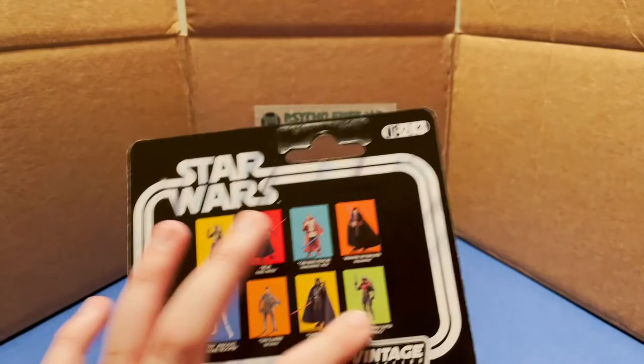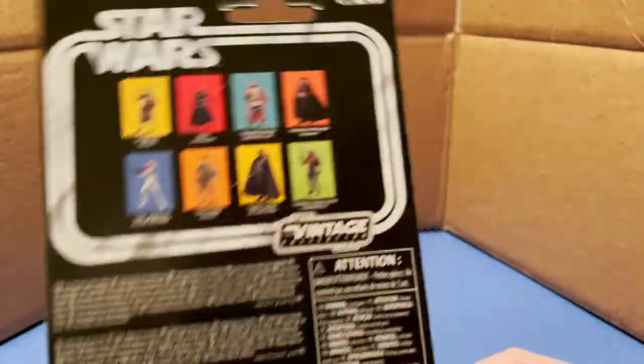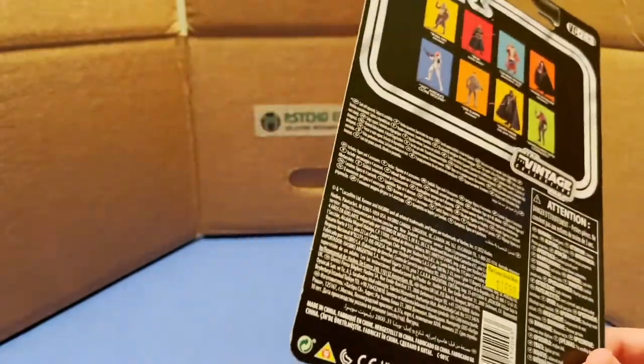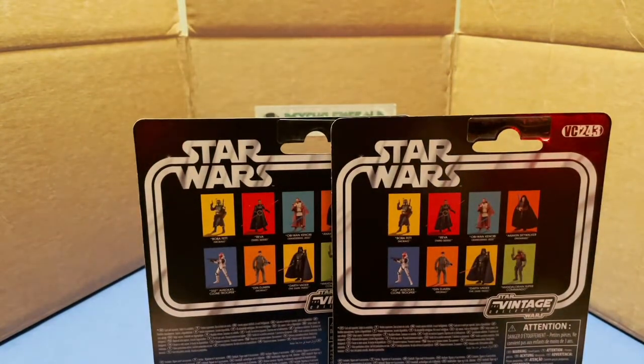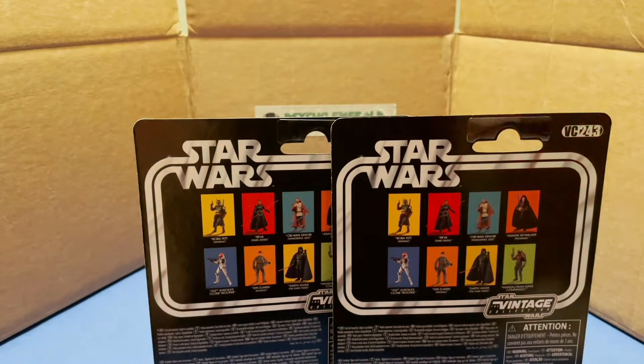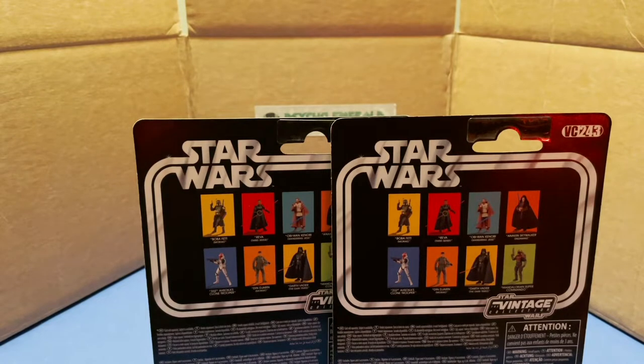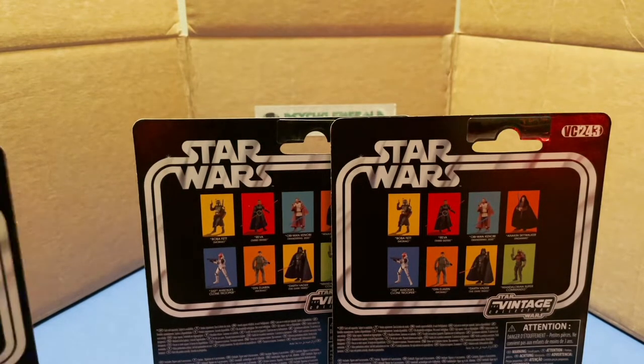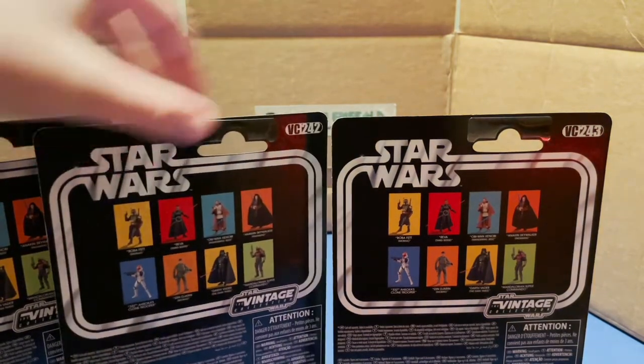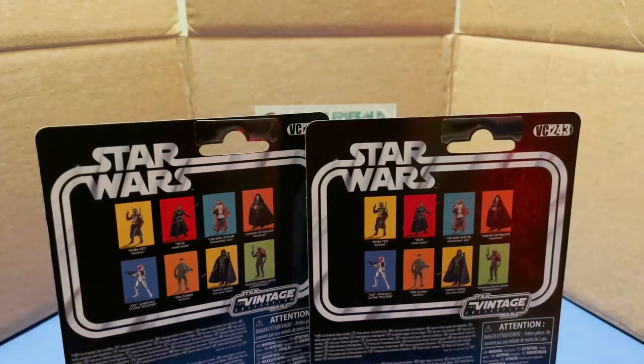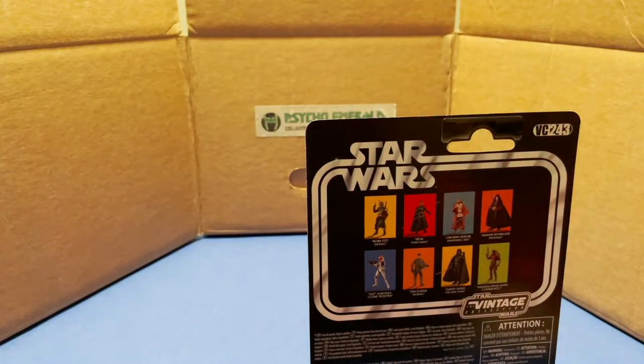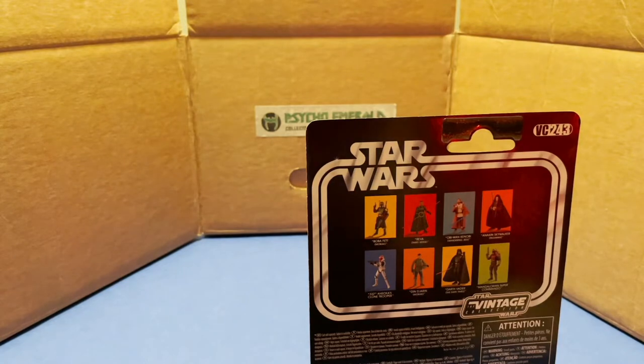On the back here, a lot of the other figures that have been released recently, of which I have these four. This is VC 243. Reva was 242, Obi-Wan was 245, Vader was 241. So we have 241, 242, 243, and 245. I wonder which one's 244, I really don't know.